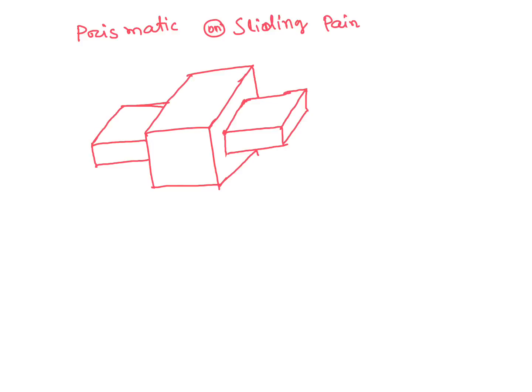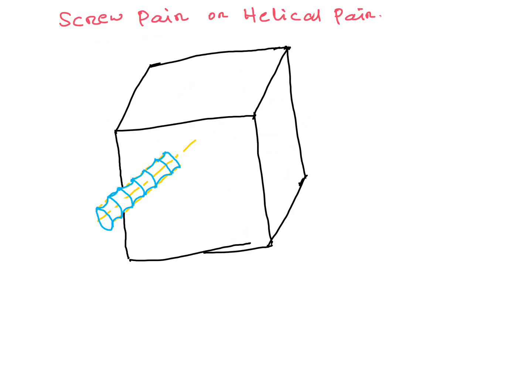A prismatic or sliding pair allows only sliding motion and is often called a sliding joint, with one degree of freedom. A screw pair or helical pair is very important — it also has only one degree of freedom because the sliding and rotational motions are related by the helix angle. The degree of freedom is a function of the helix angle.